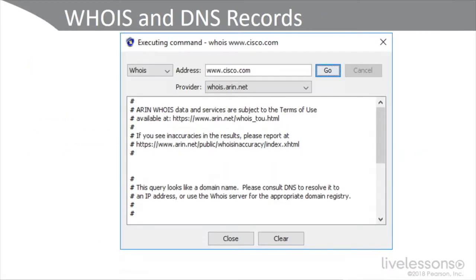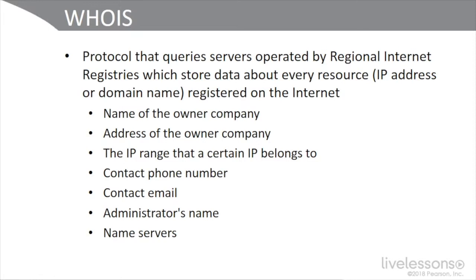Know your enemy. A lot of information can be gathered by using DNS records and the WHOIS protocol. A WHOIS command run on www.cisco.com, provided by whois.arron.net, shows that the WHOIS protocol queries servers operated by the regional internet registries that store data about every resource — IP address and domain name registered on the internet. Readily available to the cracker and malicious hacker are the name and owner of the company, address, IP range, contact phone number, contact email, administrator's name, and name servers.